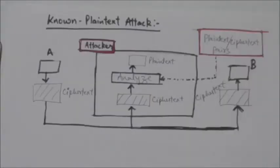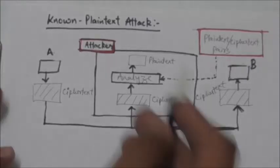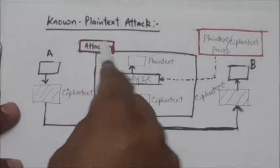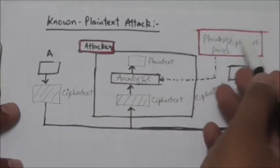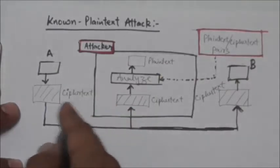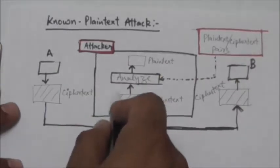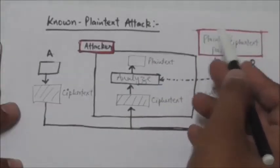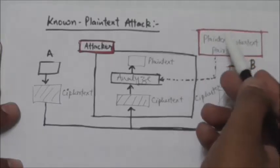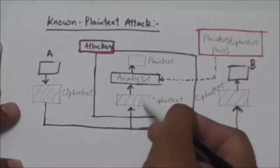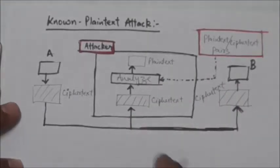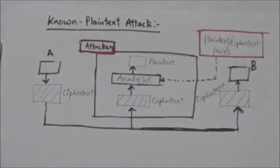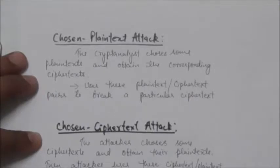The next type of cryptanalysis attack is the known plaintext attack. In this case, the attacker has access to some plaintext-ciphertext pairs in addition to the intercepted ciphertext he wants to break. The attacker uses the relationship between those previous plaintext-ciphertext pairs to analyze the current intercepted ciphertext.